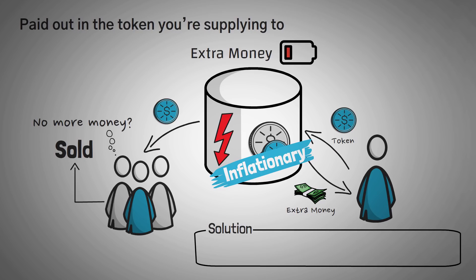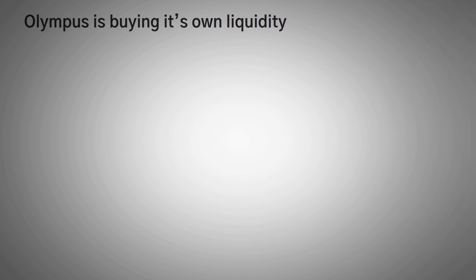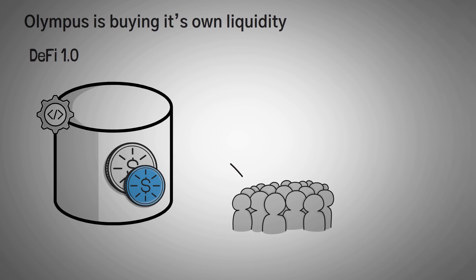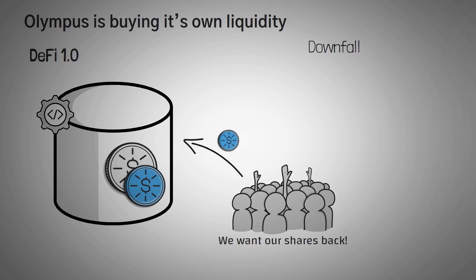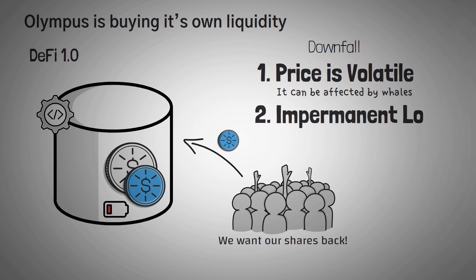The solution is simple: it's for a protocol to own its own liquidity instead of trying to incentivize other people to provide it. And that's exactly what Olympus DAO is attempting to achieve. DeFi 1.0 is characterized by a bunch of crypto protocols that rely on other crypto users providing their tokens as liquidity for other people to trade with. If someone sells their share of a large majority of the liquidity pool, the token suddenly becomes much more volatile and can be affected by whales. Users who provide their tokens can also experience impermanent loss, which is a risk of losing money without an even amount of upside.